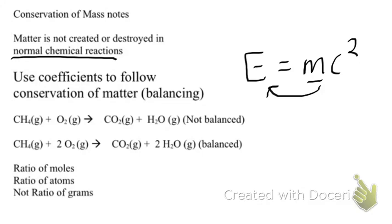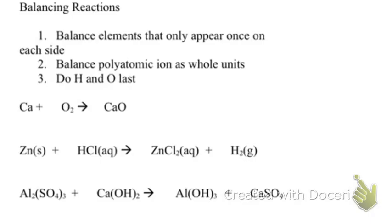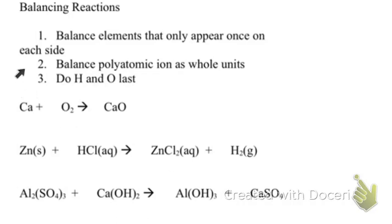We're going to learn some steps for balancing equations. There are three steps. Step one is to balance elements that only appear once on each side — for example, calcium appears once and oxygen appears once, but for another compound, aluminum appears only once on both sides while oxygen appears several times. Step two: balance polyatomic ions as whole units. So instead of counting 12 oxygens and 3 sulfurs, you can say we have 3 sulfates and balance that against one sulfate.